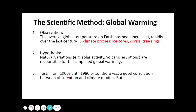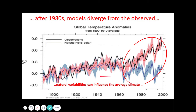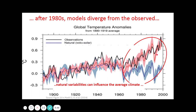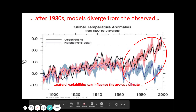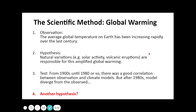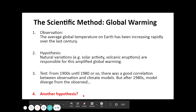To test this hypothesis, we use climate models and observations and compare them. We found that from the 1970s or 1980s onward, the rise in temperature cannot be explained by natural causes alone. The model output for natural causes shows a divergence from the observed data, meaning we need another hypothesis because that divergence is already an anomaly.